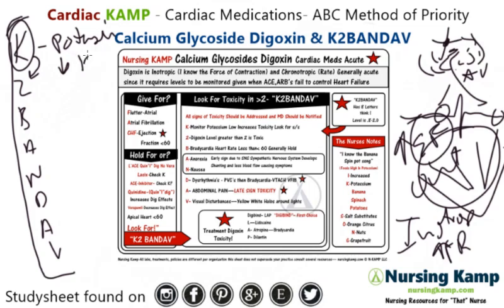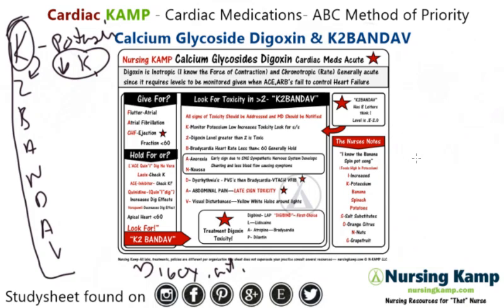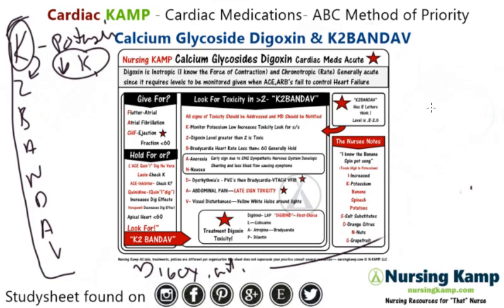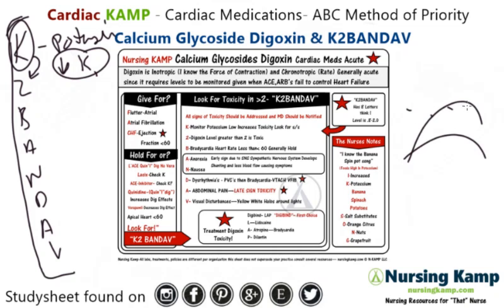If potassium is low, they can get digitoxic. Digitoxicity is problematic — that's why we monitor for bradycardia and blood pressure. If they're digitoxic, they're going to need something like digibind to correct that digitoxicity. Because it is a level medication, you can't just get rid of it quickly — it takes time to get that blood level up to the minimum therapeutic level.